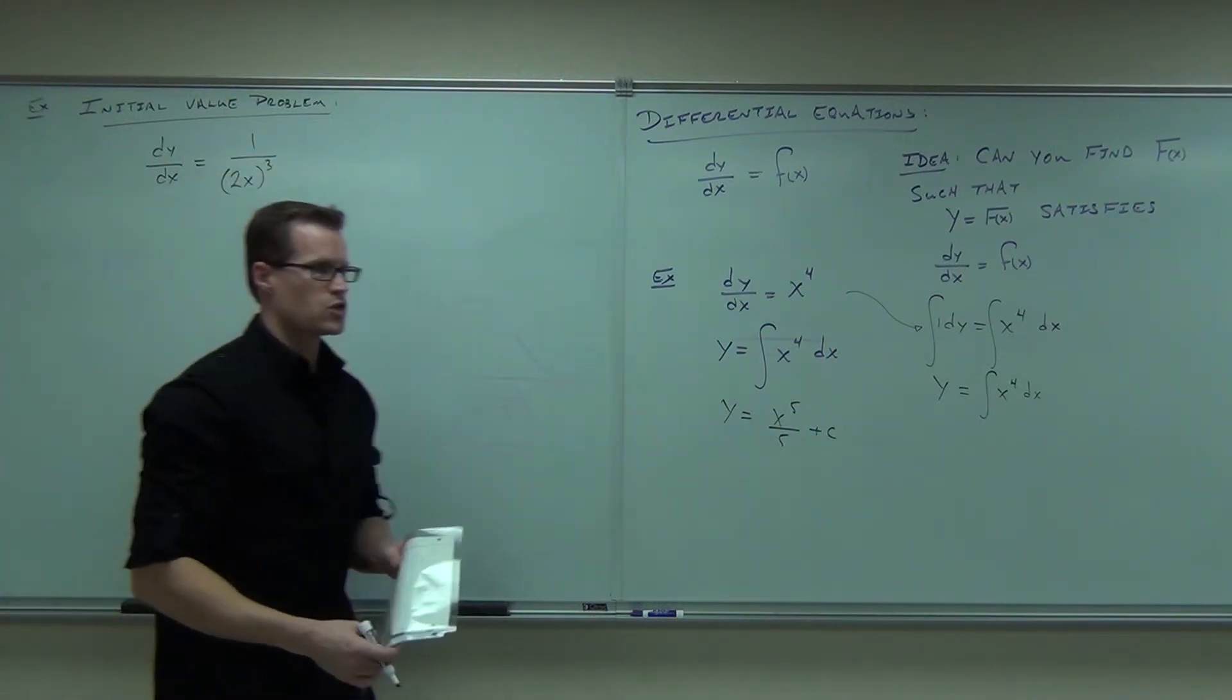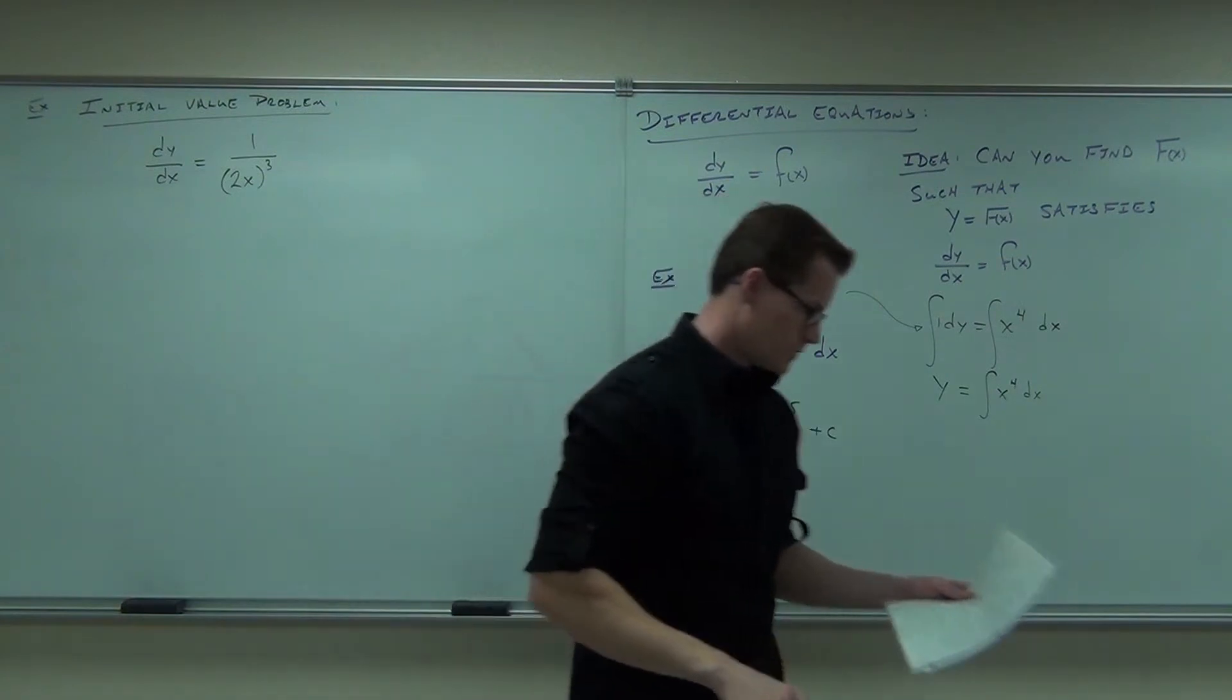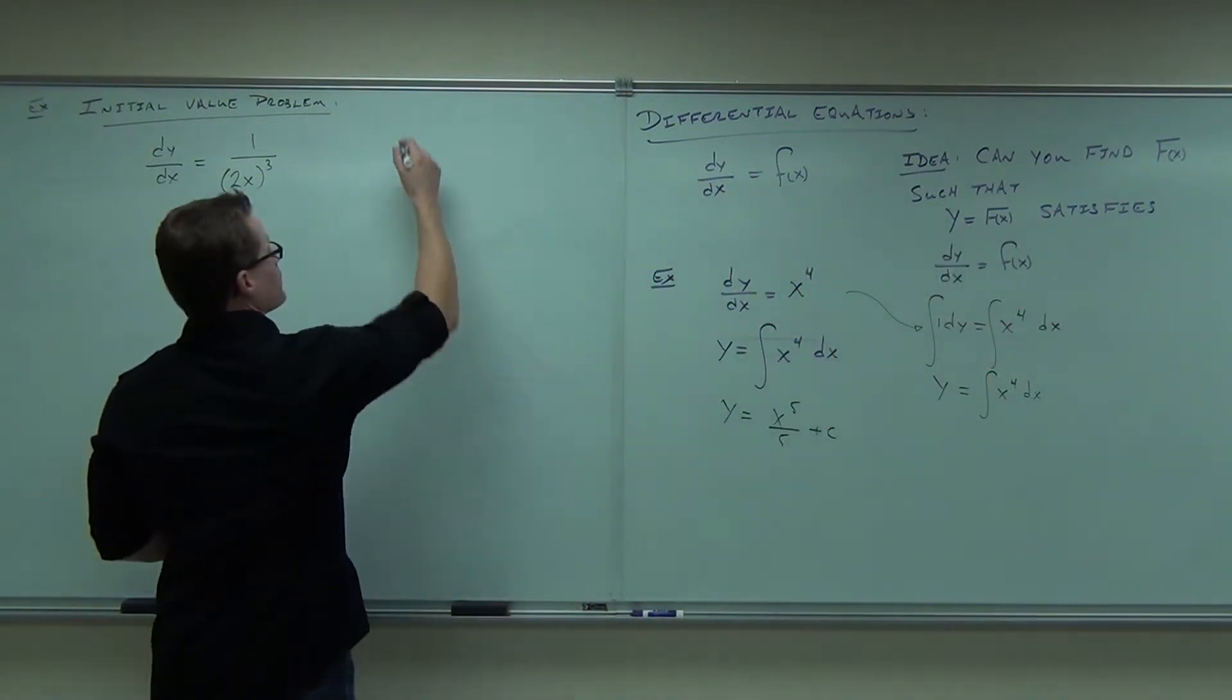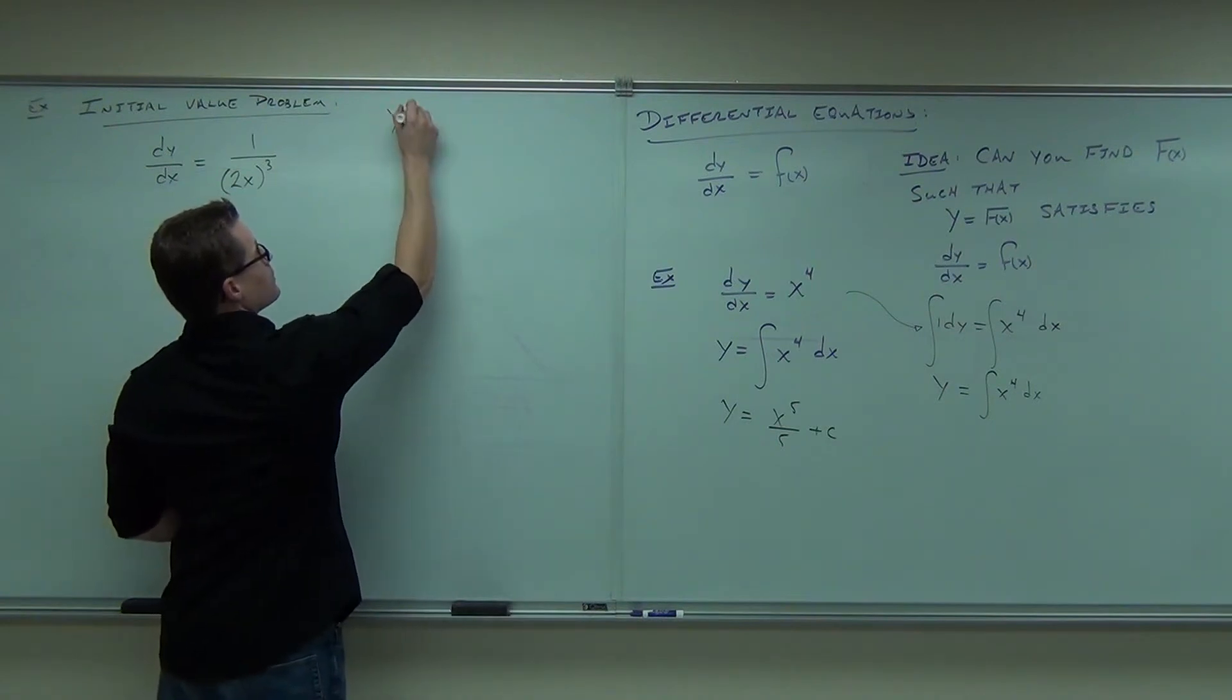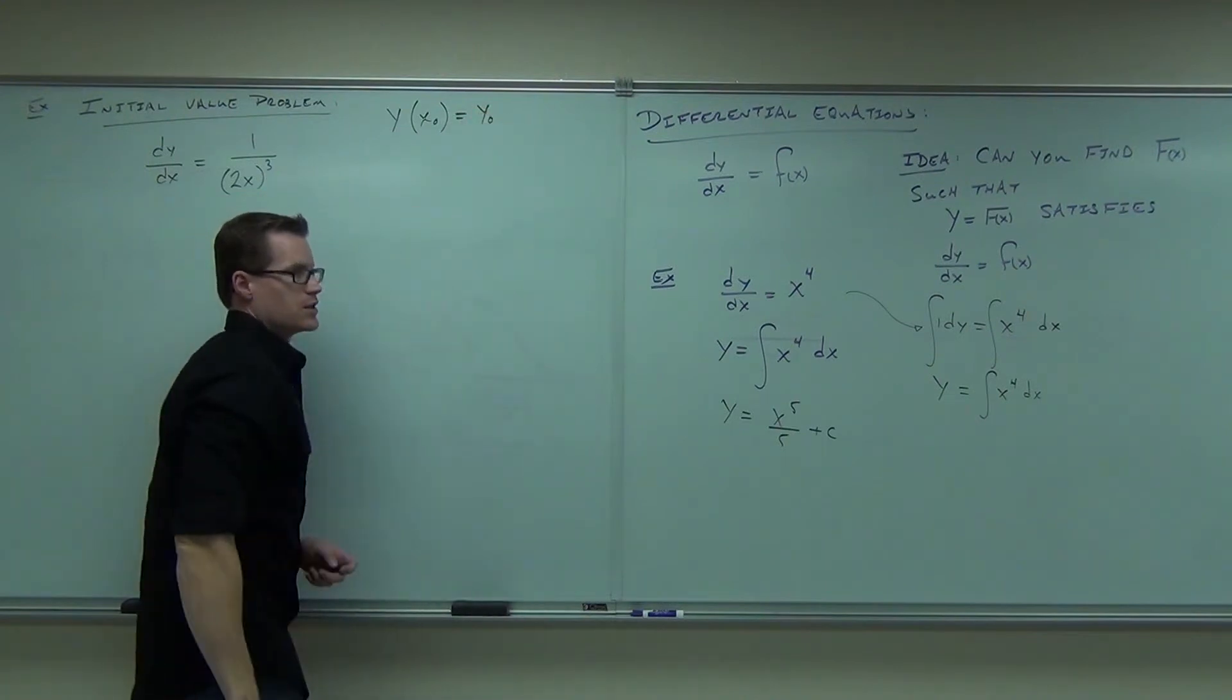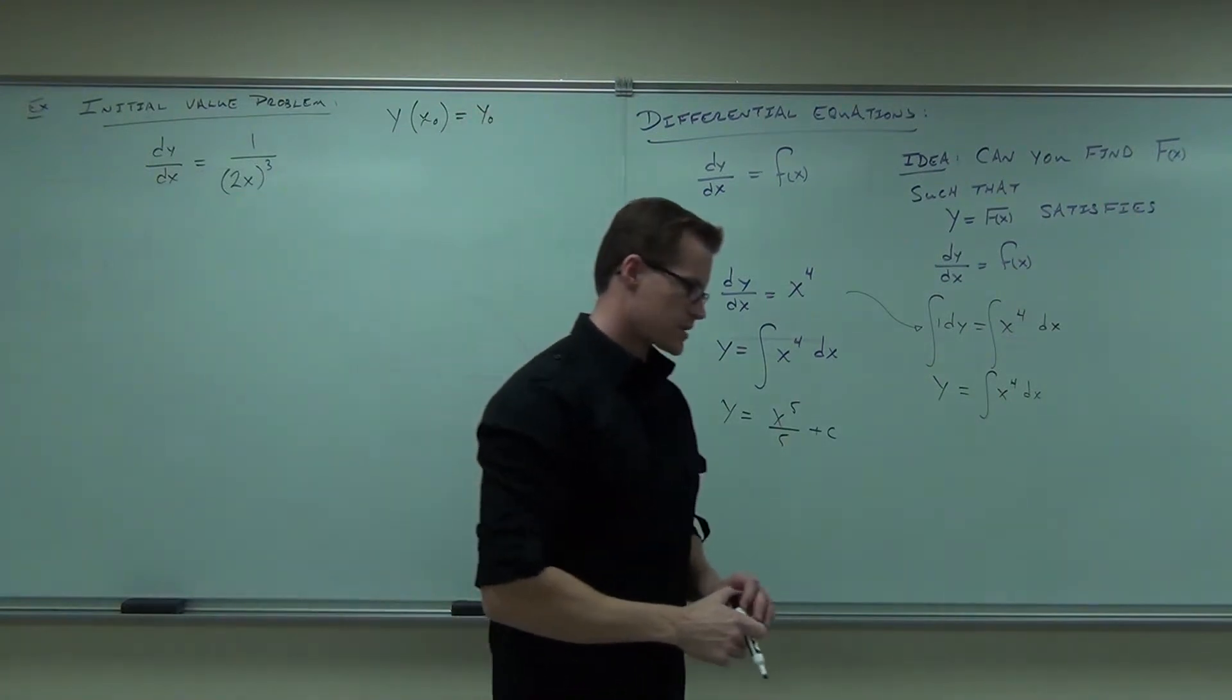dy/dx equals 1 over 2x to the quantity Q. An initial condition looks like this. It says y of some initial x value equals some initial y value. That's what that says.